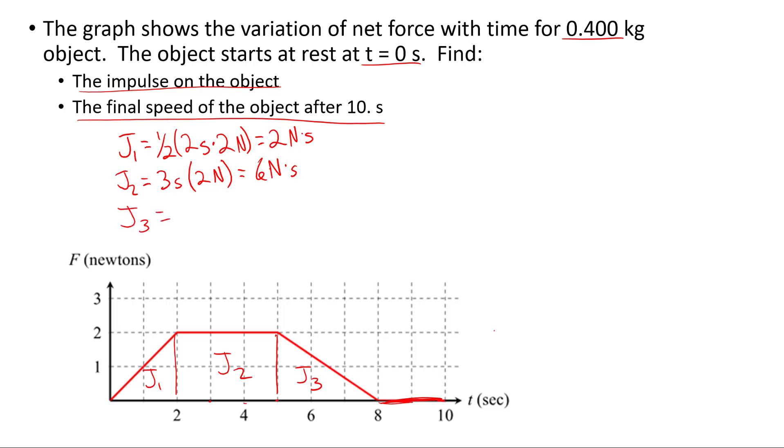J2 is going to be just base times height because it's a rectangle. It's 3 seconds times 2 newtons equals 6 newton-seconds. J3, the triangle, so one half base times height, one half. The base is 3 seconds, the height is 2 newtons. The impulse is 6 over 2, which is 3 newton-seconds.